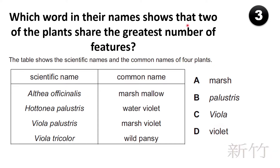Which word in their name shows that two of the plants share the greatest number of features? The table shows scientific names and common names of four plants: Althaea officinalis (marshmallow), Hottonia palustris (water violet), Viola palustris (marsh violet), and Viola tricolor (pansy). The answers are A: marsh, B: palustris, C: Viola, D: violet. If you look at the scientific names, Viola is the genus shared by two plants, making them most closely related. So the answer is C: Viola.